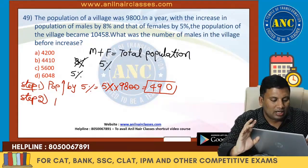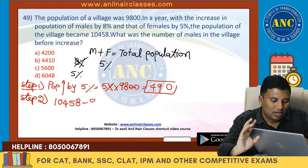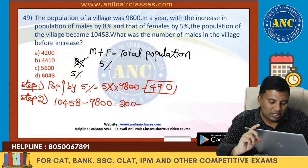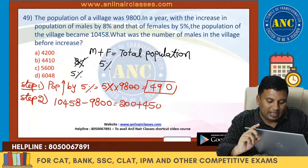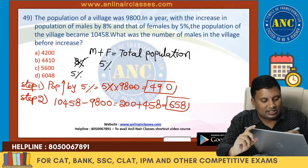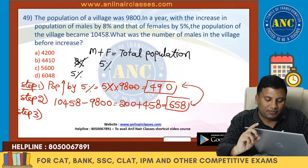So the difference is: 9,800 plus 200 gives 10,000, and extra 458 is there — so extra 658 is there. Step number three: 490 is actually becoming 658. So it is nothing but an extra 168. From where we got that extra 168? It is actually 8% — so it is 3% extra of male population.